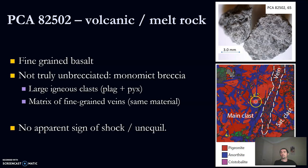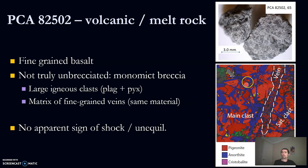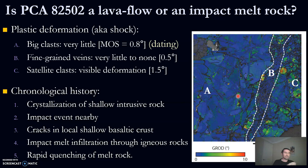We did some SEM on it. You can see it's made of pyroxene and plagioclase. But it was not, to our dismay at first, truly unshocked, because you get nice igneous clasts, but you also have some veins. Those veins are likely caused by an impact that melted the adjacent rock, and the melt infiltrated and percolated through the igneous basement. So the question was: was this part shocked by the impact?